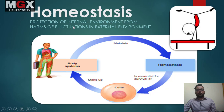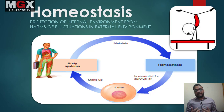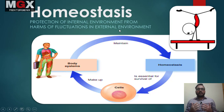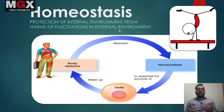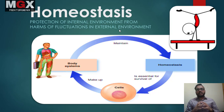So now what is homeostasis? Homeostasis, as you can see in the diagram, is to maintain balance. The definition is: protection of the internal environment from the harms of fluctuations in the external environment. In the external environment there are changes constantly, such as in the four seasons, warm weather, and storms — many fluctuations occur which can be harmful.